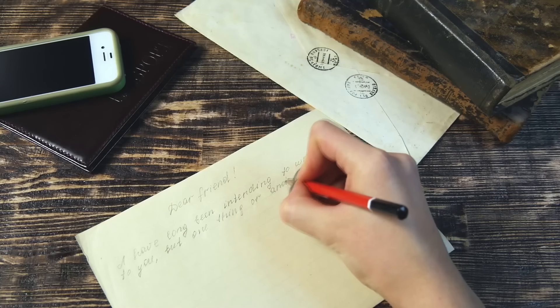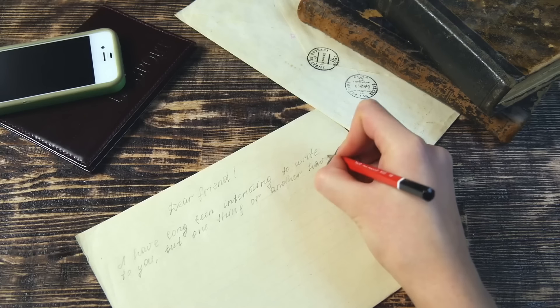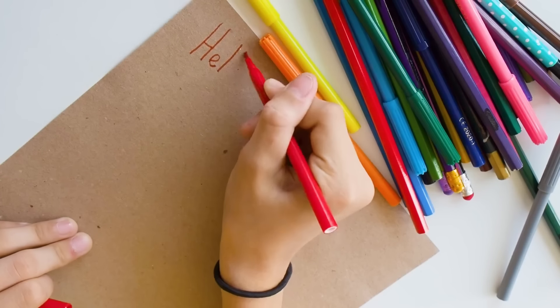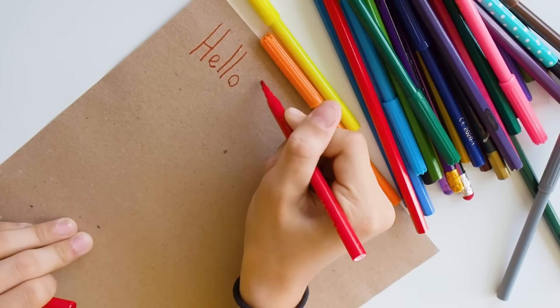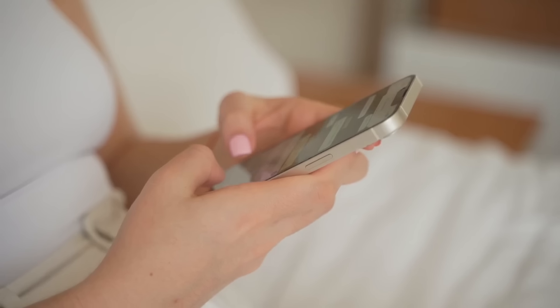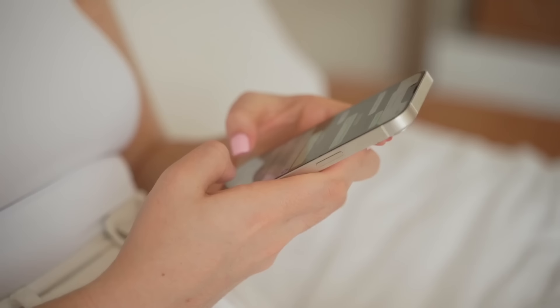When I was at school, we learned cursive writing first and block letters later. But my children learned block letters first because most of the text they read today is printed block letters. And by now, they happily type away on their phones and tablets. What's it doing to their brains?